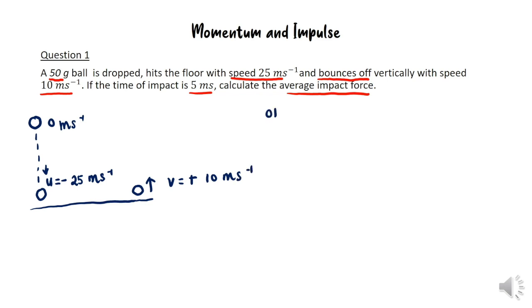We have U equals negative 25 and V equals positive 10 meters per second. Don't forget that your U must have a negative sign since it's moving downward.